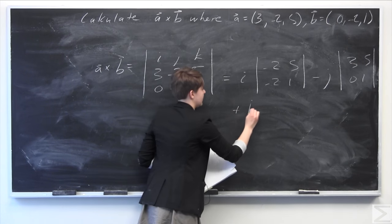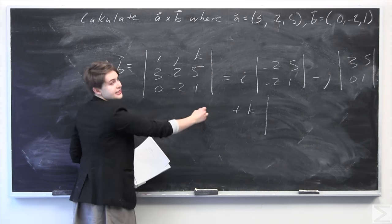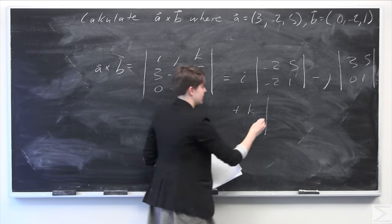And finally, we have a plus k term here. We're going to cross out the last column and first row. So we have 3, -2, 0, -2.